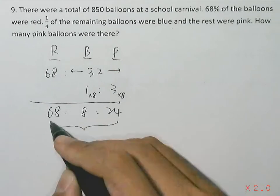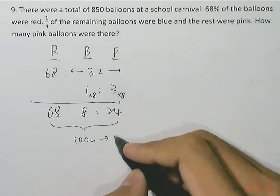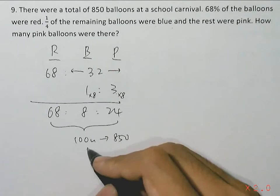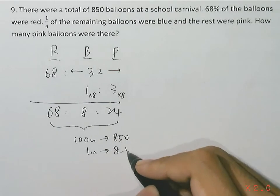So the total amount of balloons over here, 100 units, adds up to 850 balloons. So one unit is 850 dividing by 100, giving 8.5.